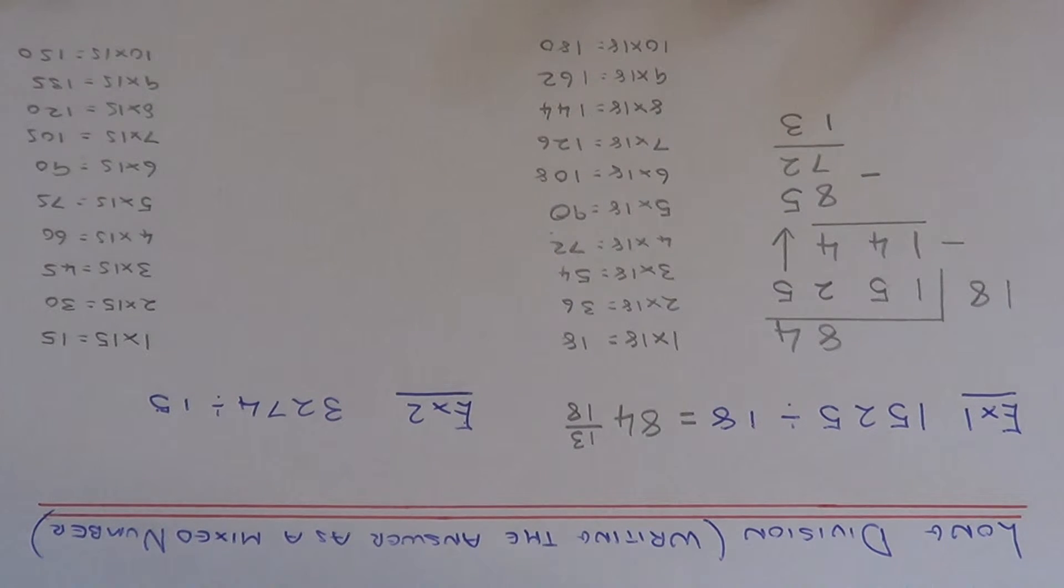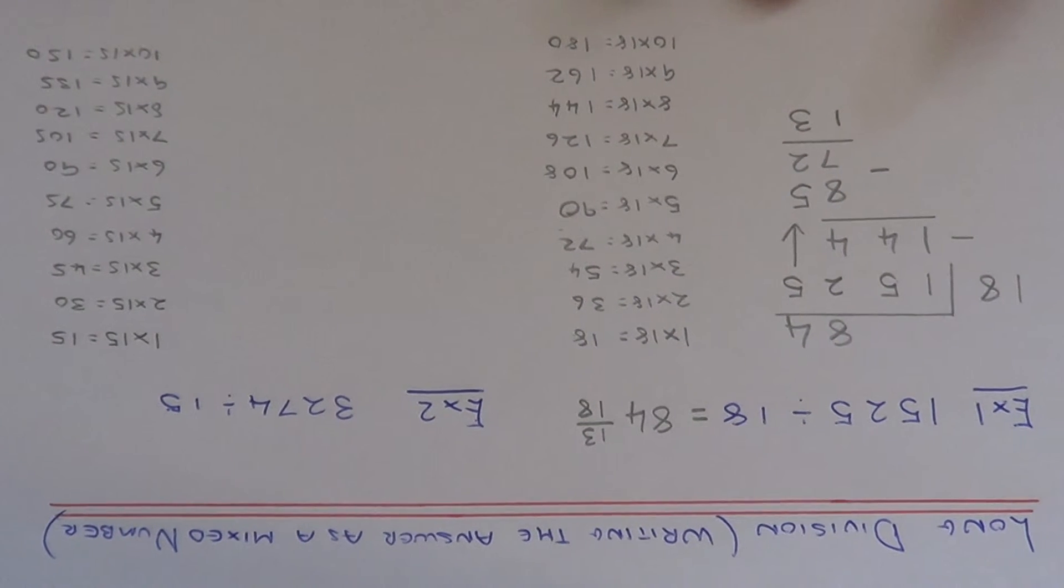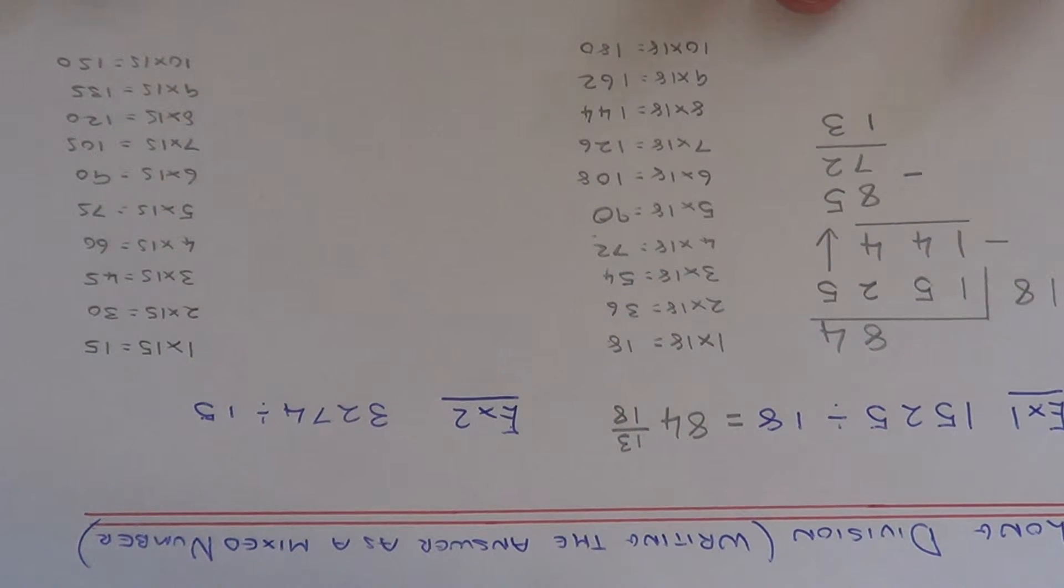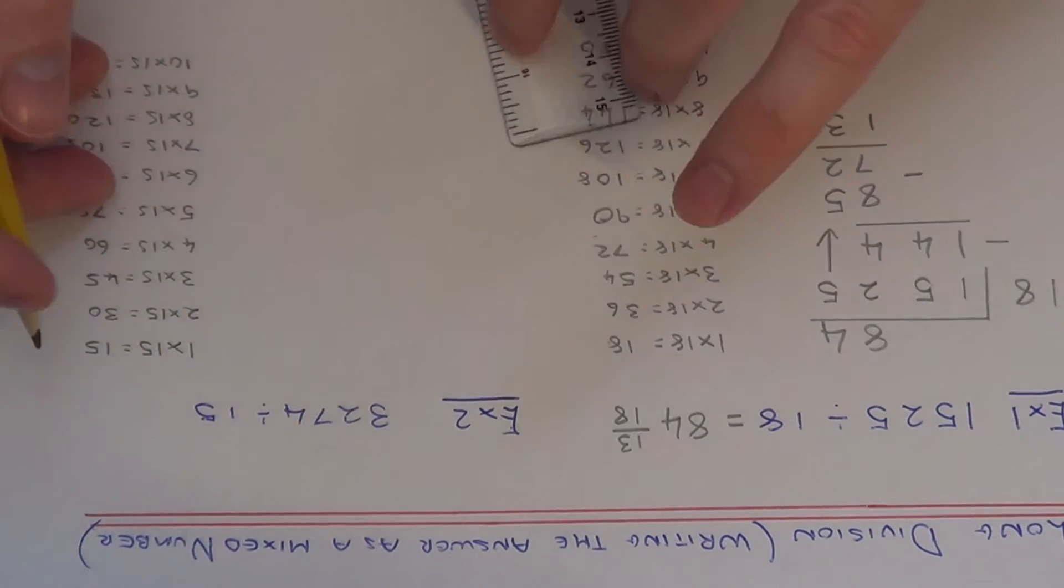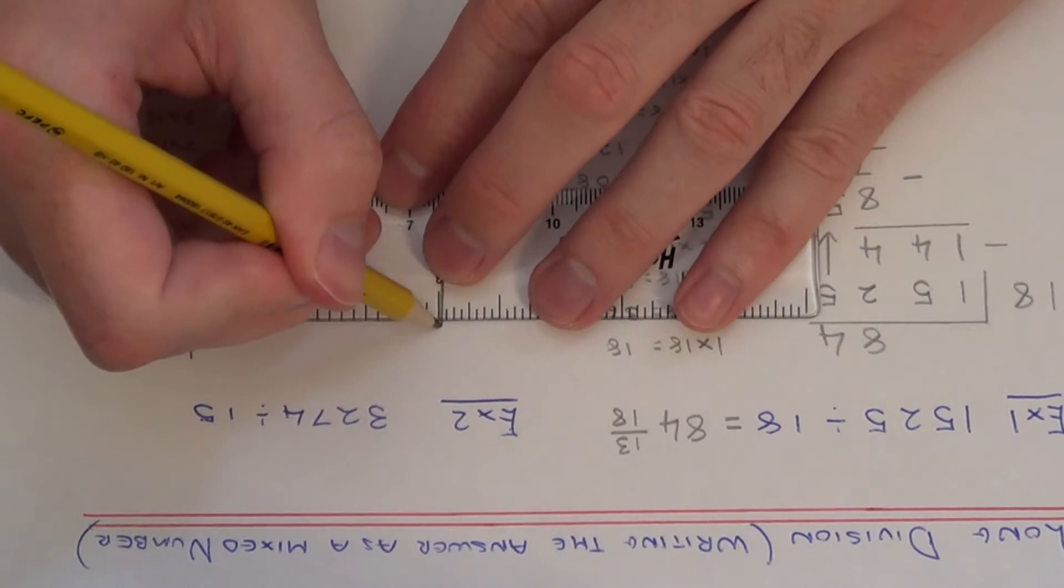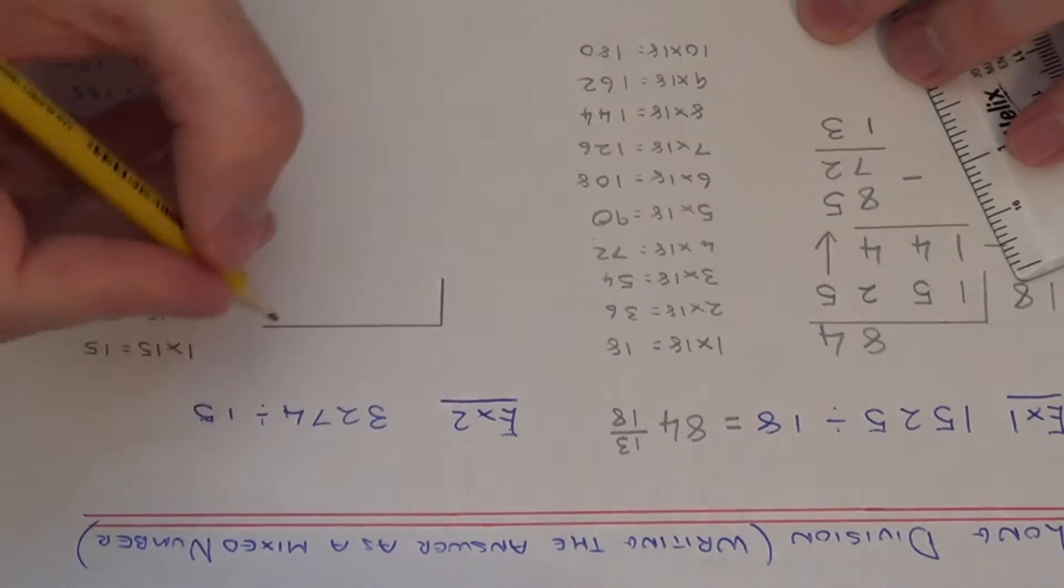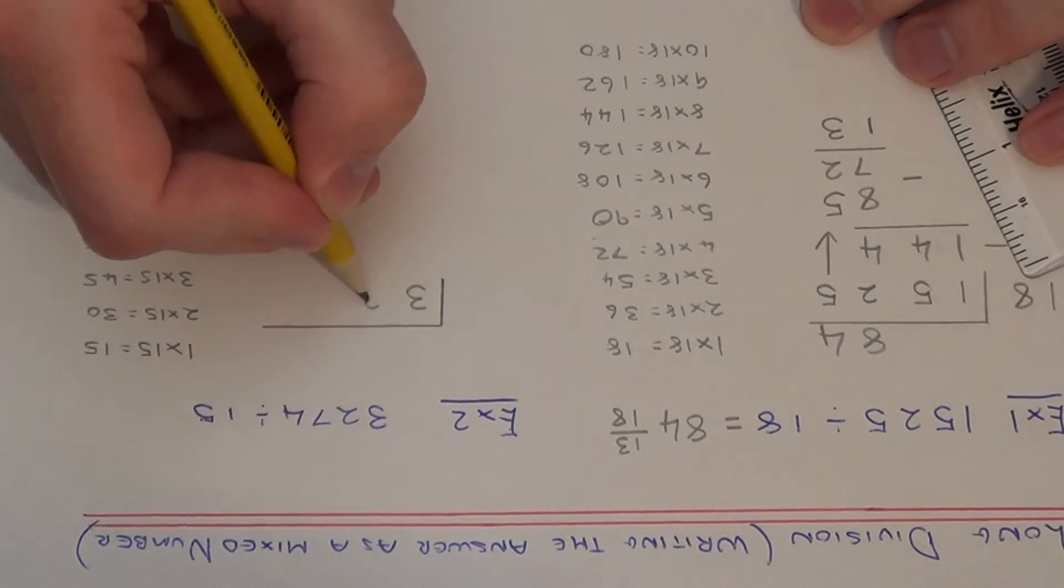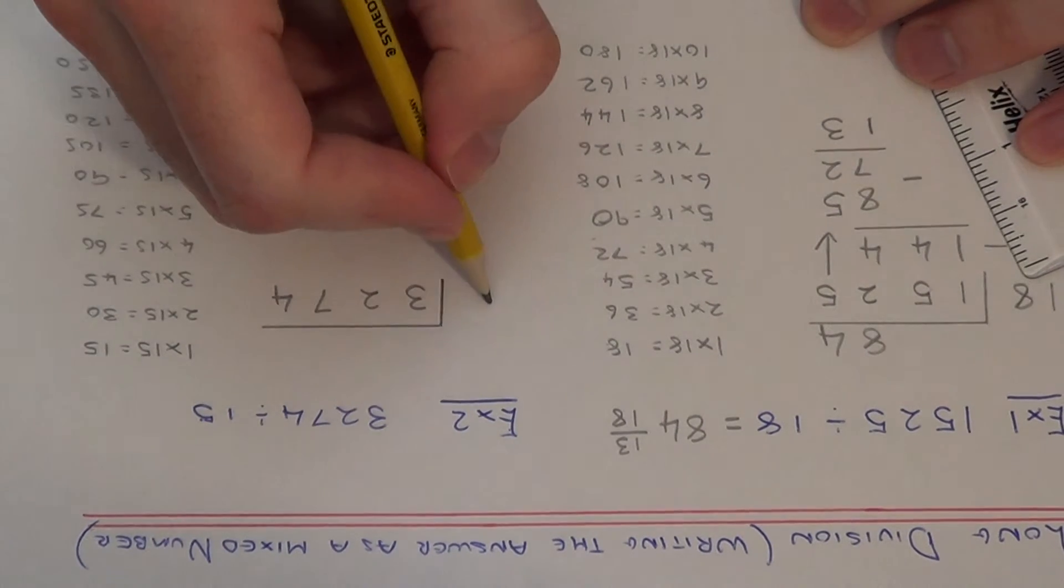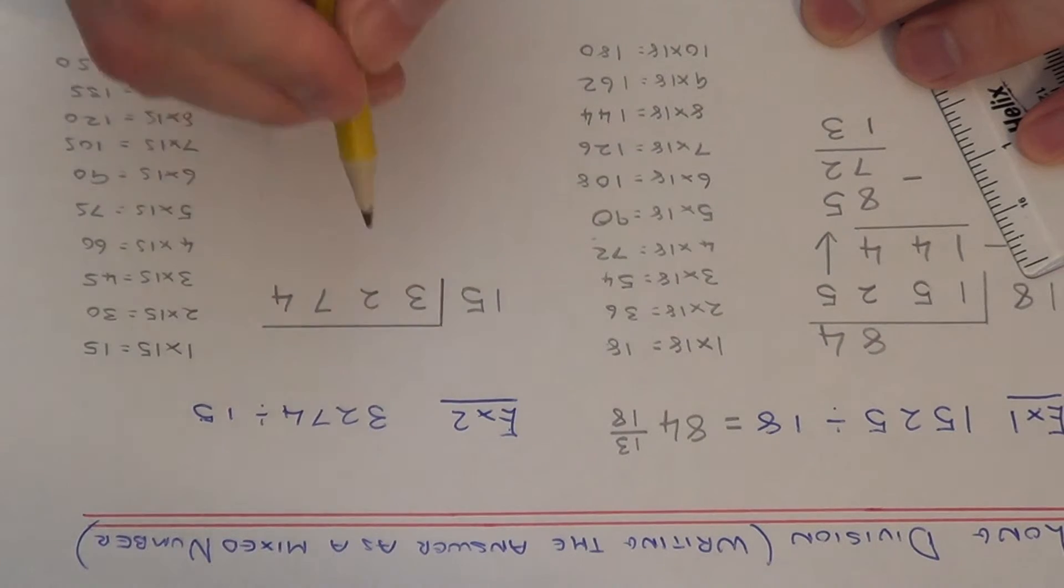Let's carry out one more example. This time we've got 3274 divided by 15. Again, I've spent two or three minutes just jotting down multiples of 15 on the side of my page. So set your division out in the normal way. Write 3274 underneath the horizontal line, and the number we divided by will go at the start.